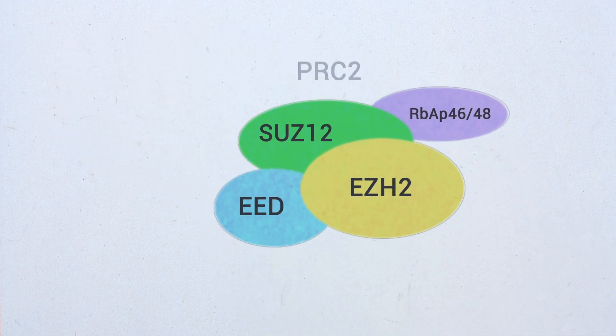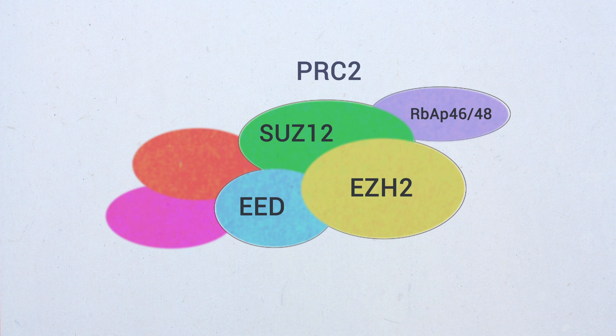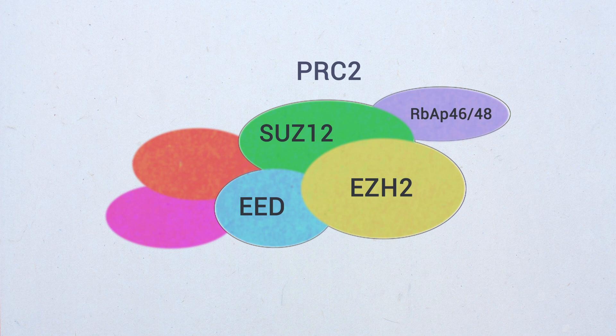PRC2 associates with several cofactors that may modulate its activity and aid in its recruitment to chromatin. The best characterized cofactors are AEBP2 and JARID2, which coexist in vivo with PRC2.